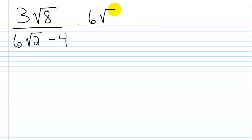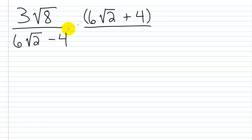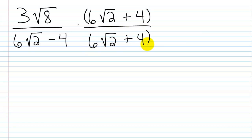So 6 times the square root of 2 — instead of this being a minus, it's going to be a plus and then a 4. The terms are the same, the sign is different: 6 times square root of 2 plus 4. Terms are the same — 6 times square root of 2; 4 and 4 — sign is different. We got a minus and we got a plus.